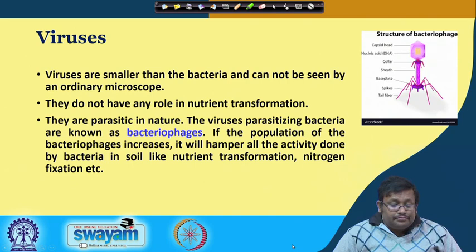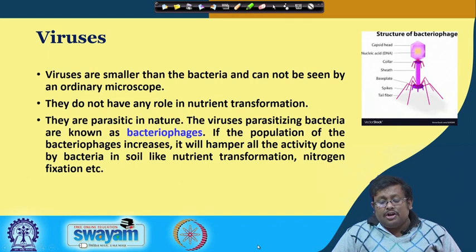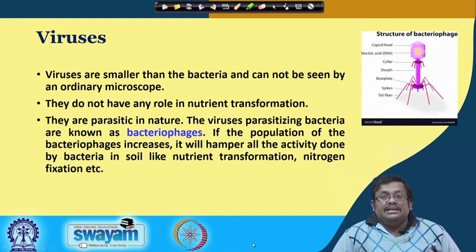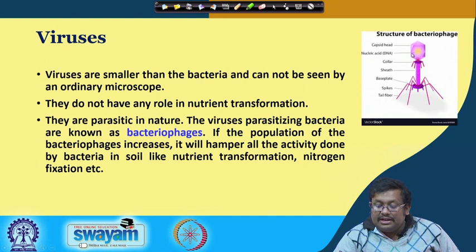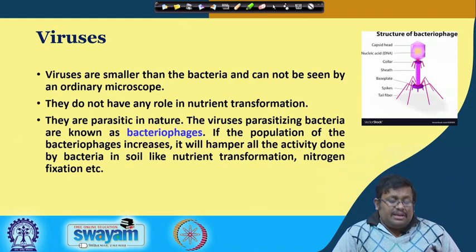The last soil microorganism group is viruses. Viruses are smaller than bacteria and cannot be seen by ordinary microscope. They do not have any role in nutrient transformation — they are only parasitic in nature. Viruses that parasitize bacteria are known as bacteriophages. If the population of bacteriophages increases, it will hamper all activities done by bacteria in soil like nutrient transformation and nitrogen fixation. The bacteriophage structure includes a capsid head containing nucleic acid (DNA), followed by a collar, sheath, base plates, spikes, and tail fibers.